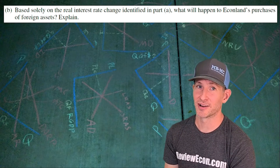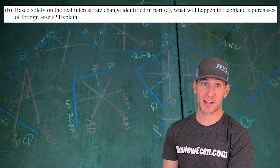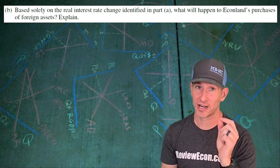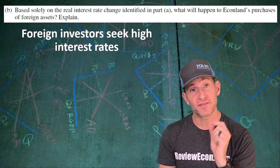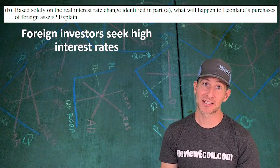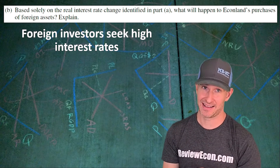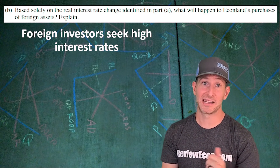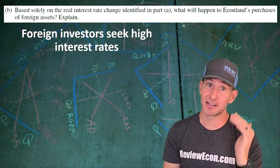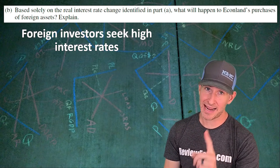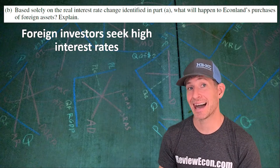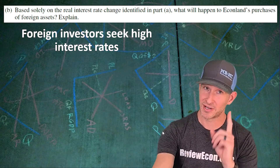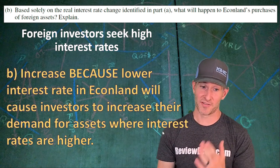Part B is a little bit trickier. Based on that decrease in the real interest rate that we just saw, we're going to say what will happen to Econoland's purchase of foreign assets. We need to remember that foreign investors seek higher rates of interest. That's because foreign investors get paid interest. When we talk about an investment generally, we're talking about businesses buying physical capital and they pay that interest, so they like a low interest rate. But foreign investors are getting paid that interest rate and seek a high interest rate. Since interest rates are higher elsewhere, Econoland's investors are going to increase their purchase of those foreign assets.